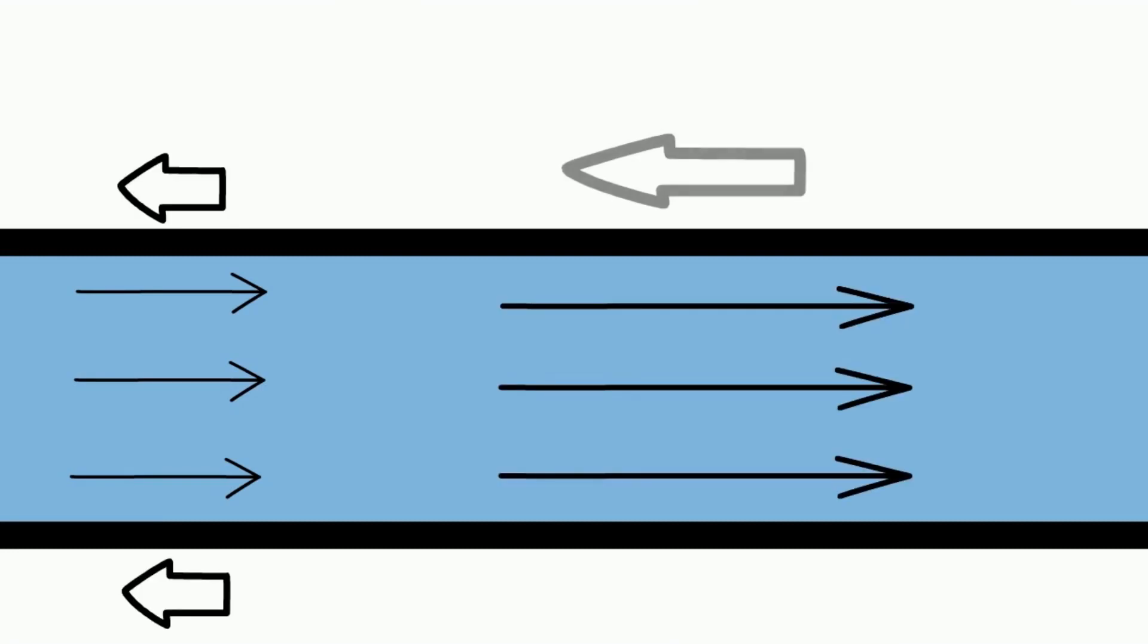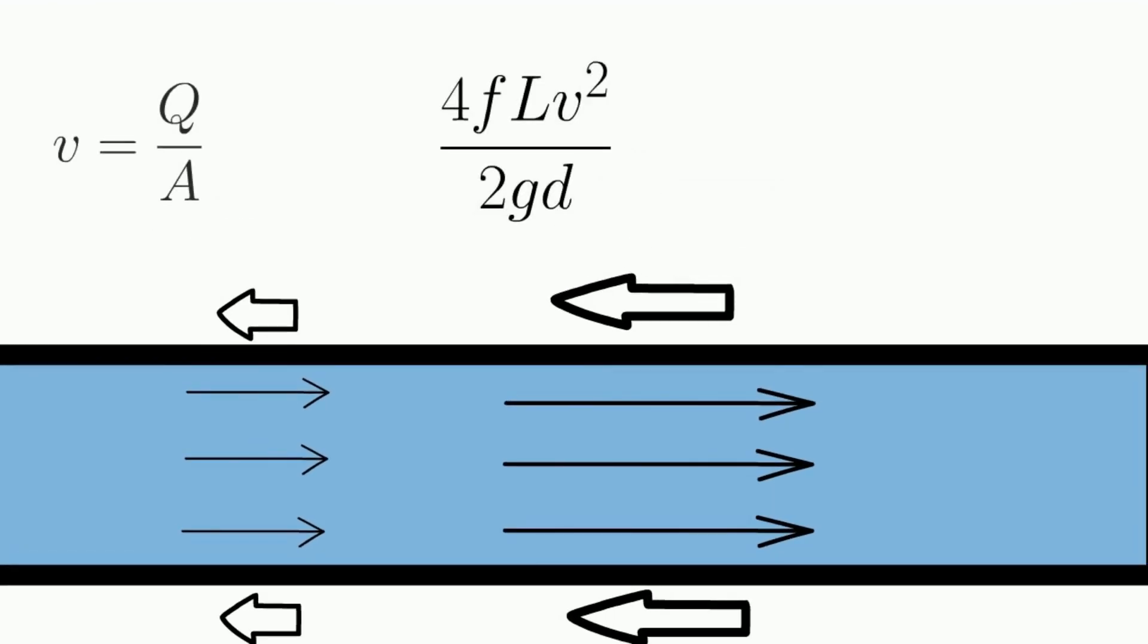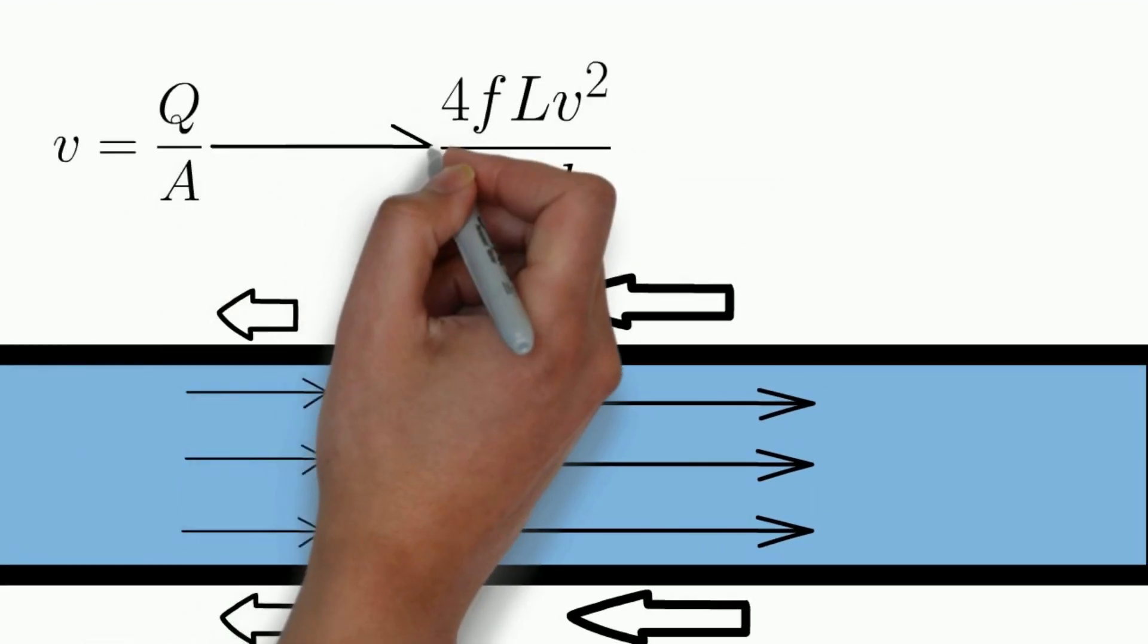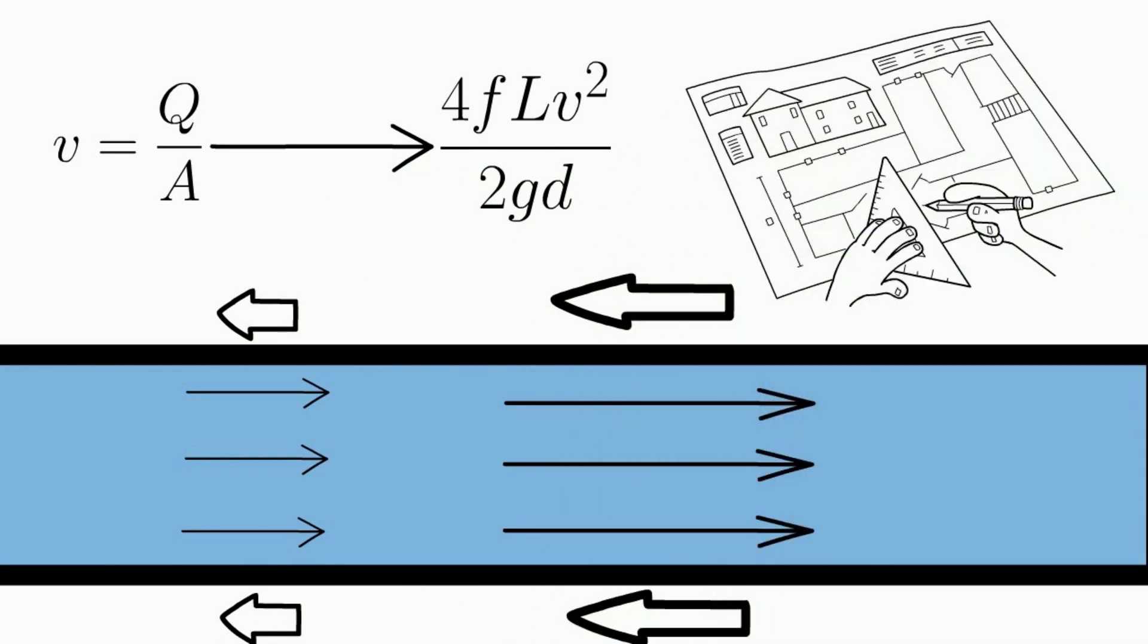The flow rate of the fluid is another important factor in head loss. Higher flow rates will result in greater frictional head loss, because the fluid will be moving at a higher velocity and encountering more resistance. This is why it's important to design fluid systems with appropriate flow rates for the intended application.